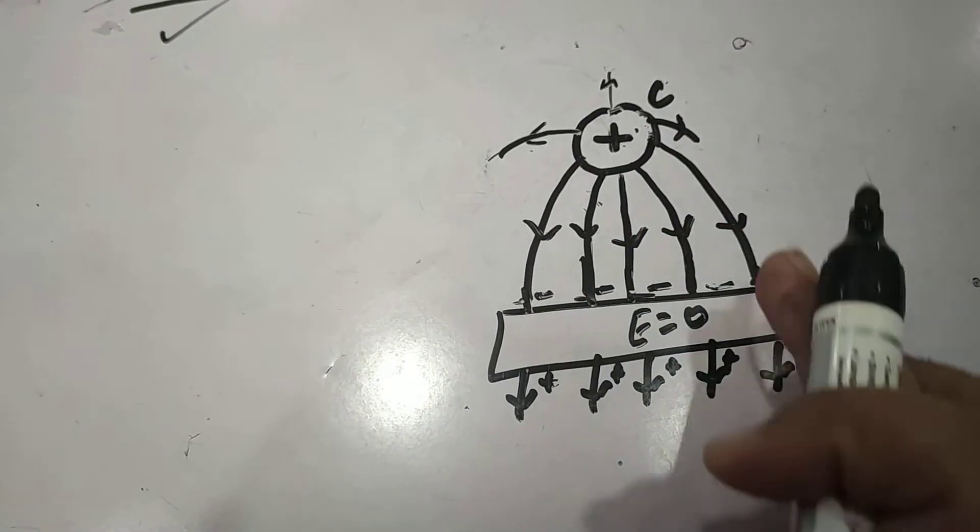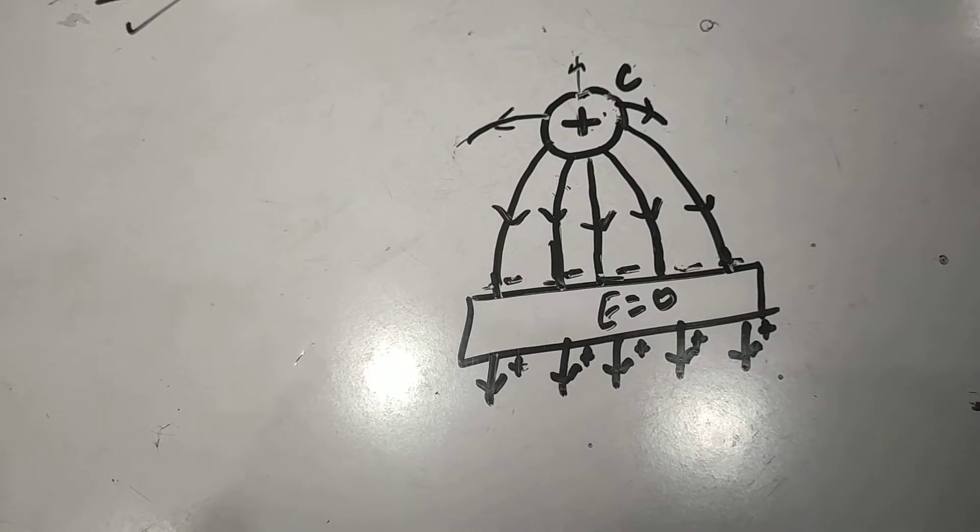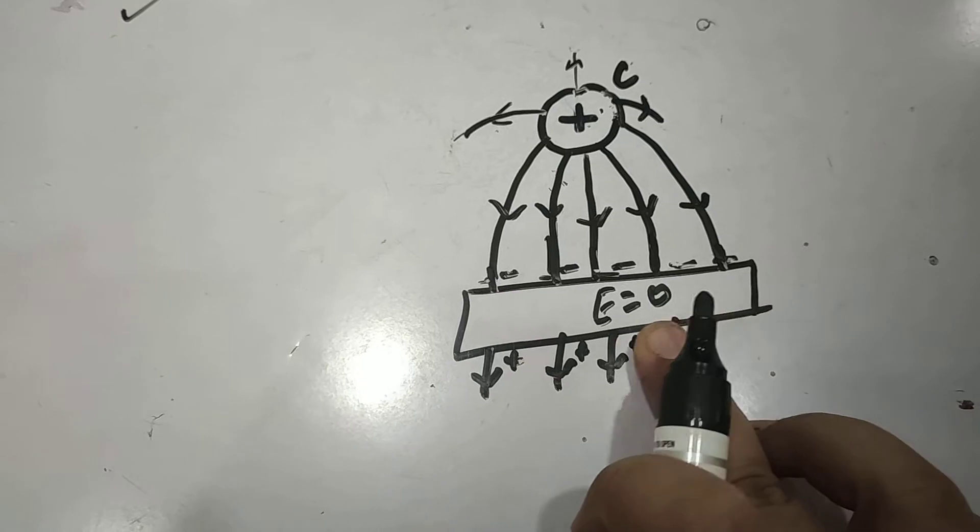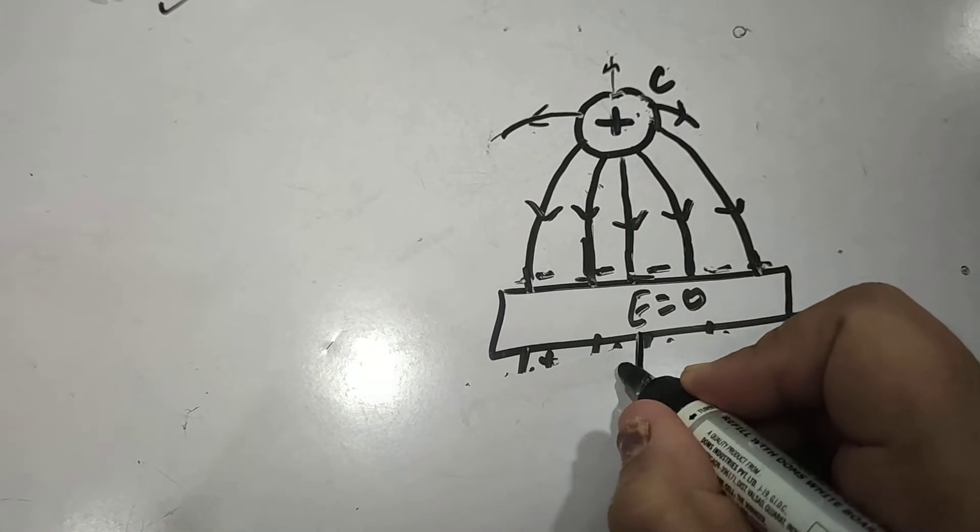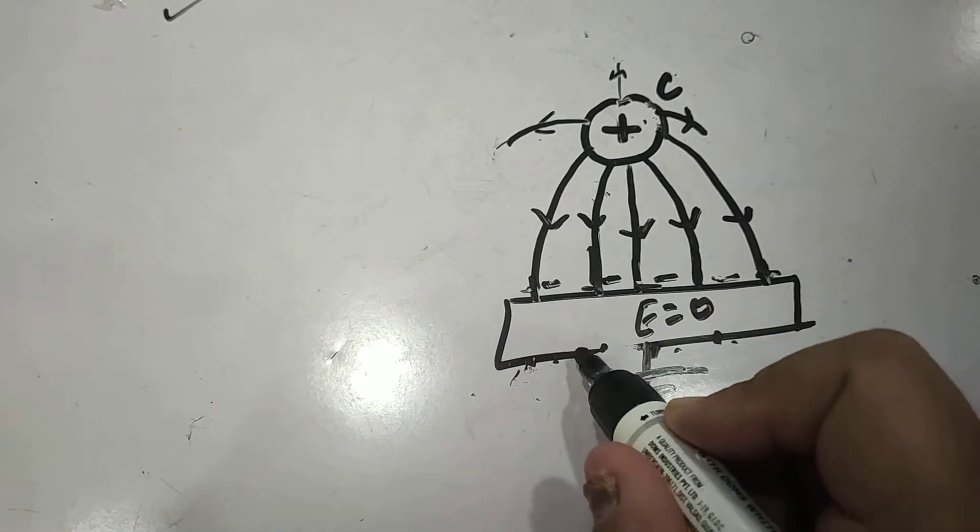And more probably what we can do is we can earth it. If we earth this, then all the positive charge will flow to the earth and the field remains above all the outside space of the conductor.